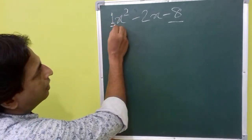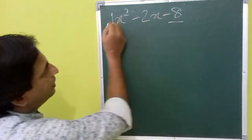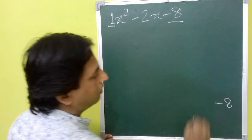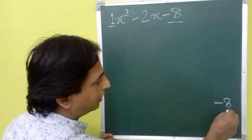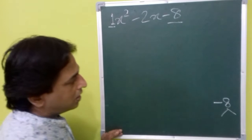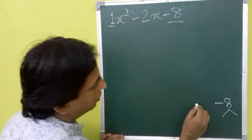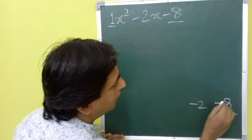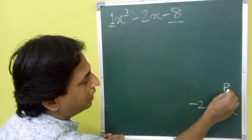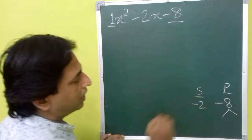Here the coefficient is 1. So we will multiply minus 8 by 1. We need to factorize it into two parts so that when you add them you get minus 2. That means the product should be minus 8 and the sum should be minus 2.